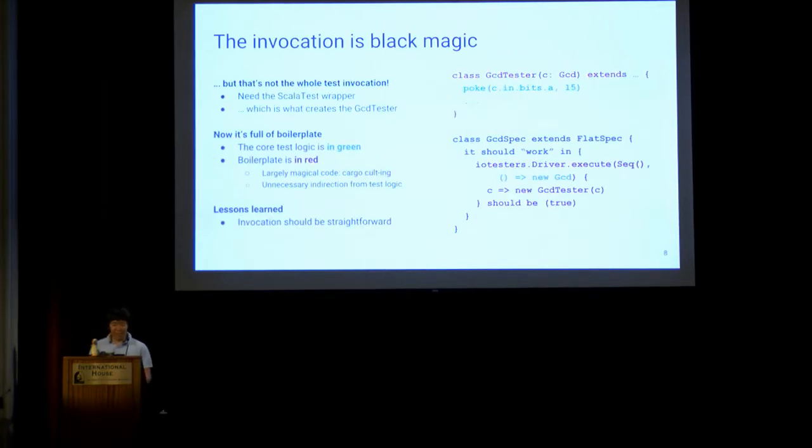To be completely honest, I was being a bit economical with the truth there with the code shown. It turns out that if you actually wanted this to run in the testers, there's a bit more scaffolding. You have the ScalaTest test, which instantiates the DUT and the tester. This code example is a bit misleading because I've collapsed some of the test logic. The ratio of test logic to boilerplate is not great. So this is the first thing that we want to fix. There's quite a bit of magic code in the driver invocation that basically ends up being cargo cult copy-pasted and adds nothing useful, plus an unnecessary layer of indirection.